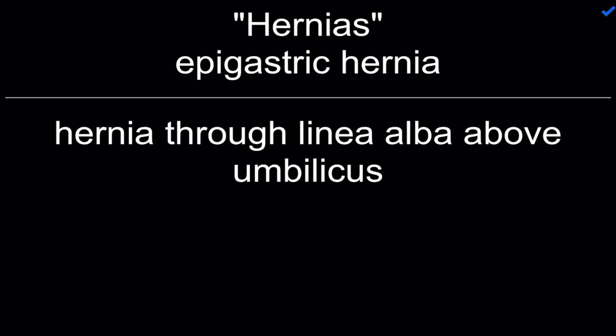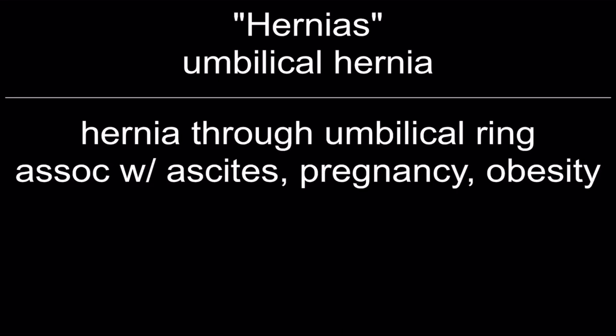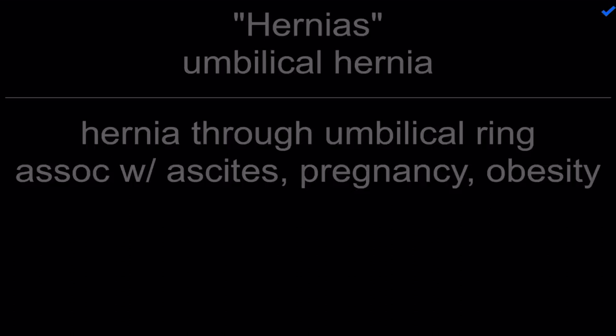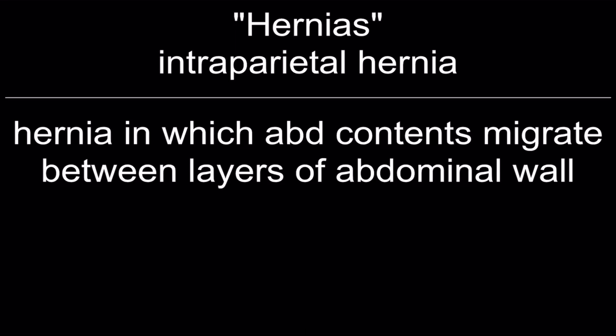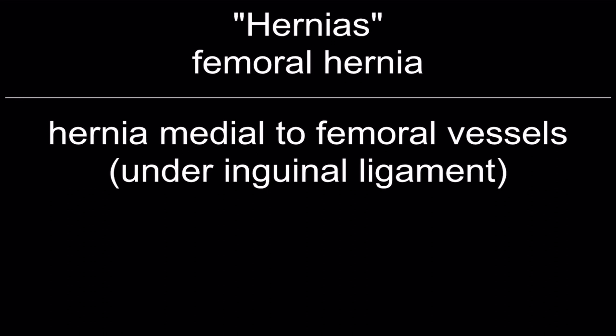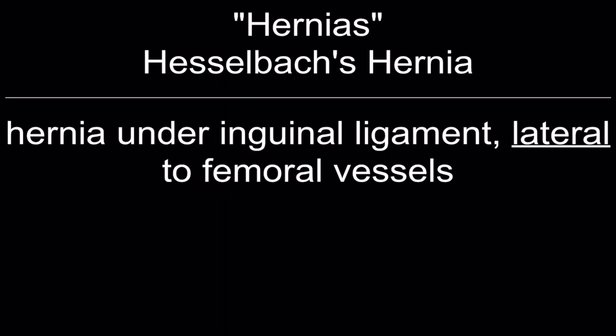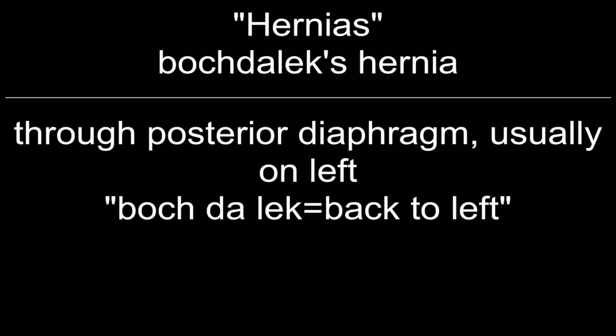Epigastric hernia: through the linea alba above the umbilicus. Umbilical hernia: through the umbilical ring, associated with ascites, pregnancy, and obesity. Intraparietal hernia: abdominal contents migrate between layers of the abdominal wall. Femoral hernia: medial to the femoral vessels, under the inguinal ligament. Hasselbeck's hernia: under the inguinal ligament, lateral to the femoral vessels. Bochdalek's hernia: through the posterior diaphragm, usually on the left. Morgagni's hernia: anterior parasternal diaphragmatic hernia.